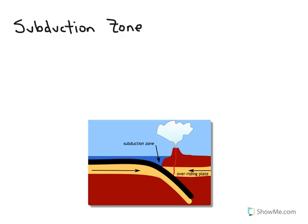Another plate boundary that occurs when two plates come together is called a subduction zone. In this case, the two plates are going to be of two different thicknesses.